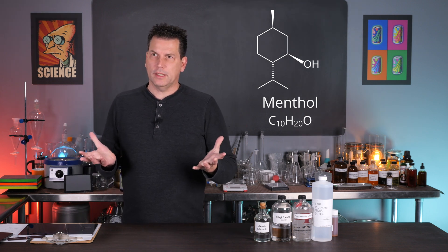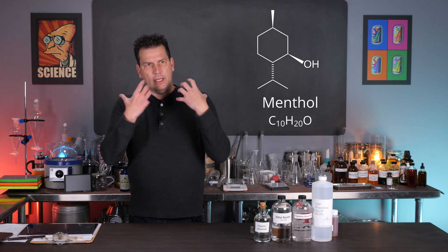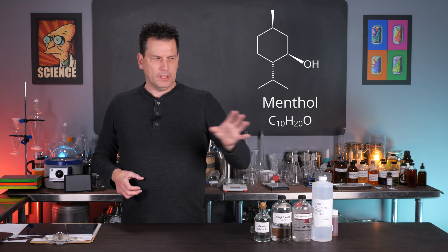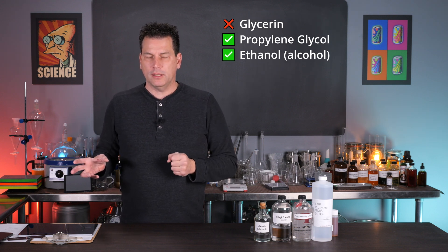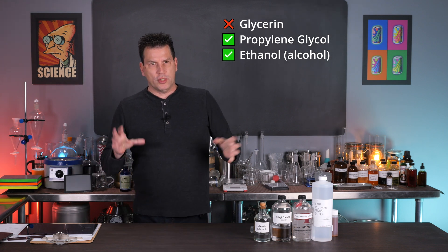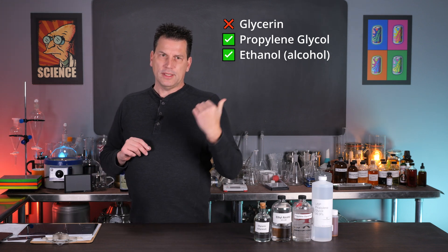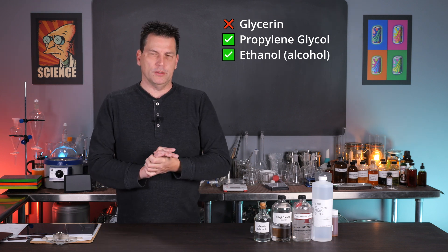So now this is menthol. It is obviously the key component in mint, spearmint, peppermint, and it is not soluble in glycerin, but it is soluble in alcohol and propylene glycol. And it's up to 50% in propylene glycol, according to some research sites. So that's a good choice if you're working with mint oils or spearmint oils.